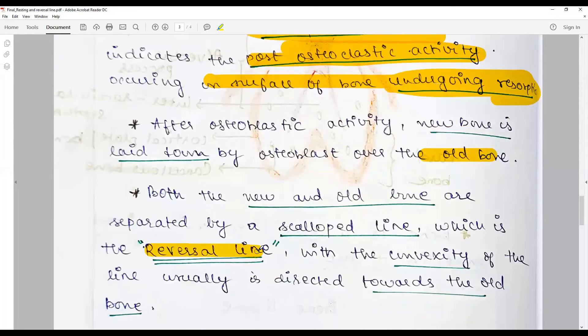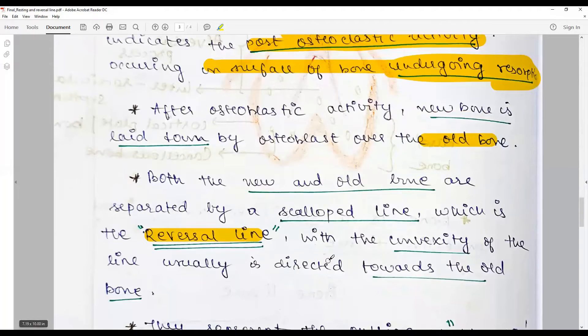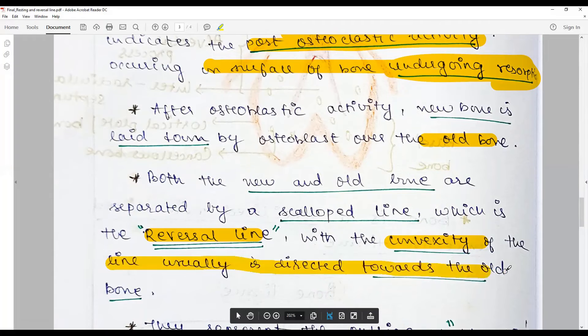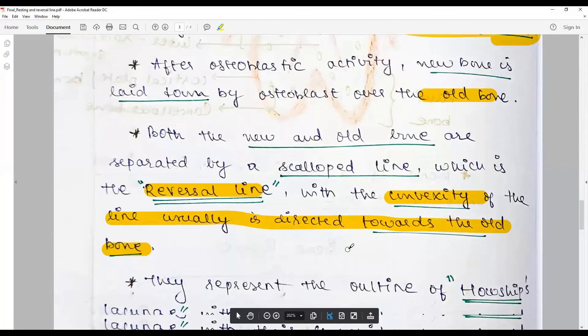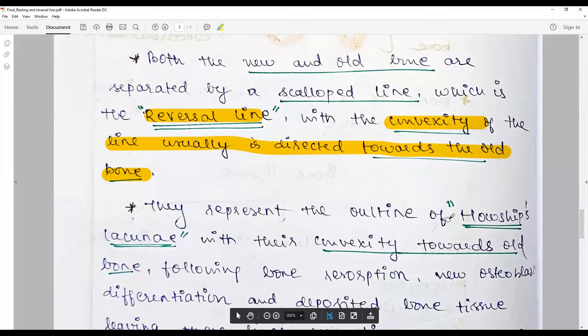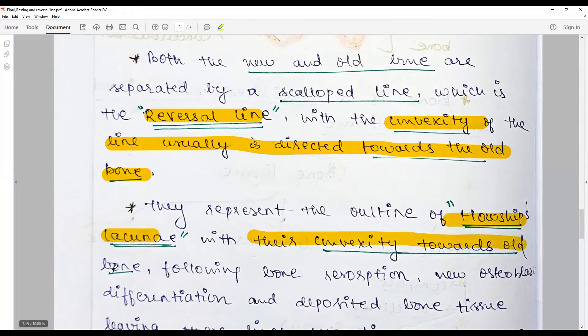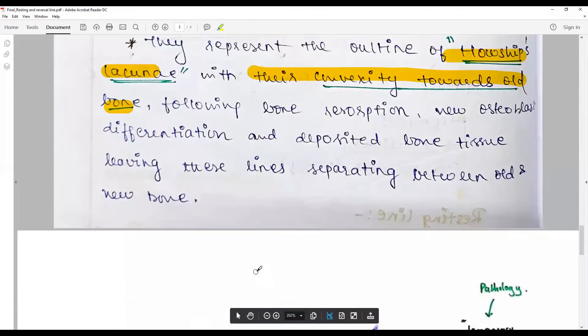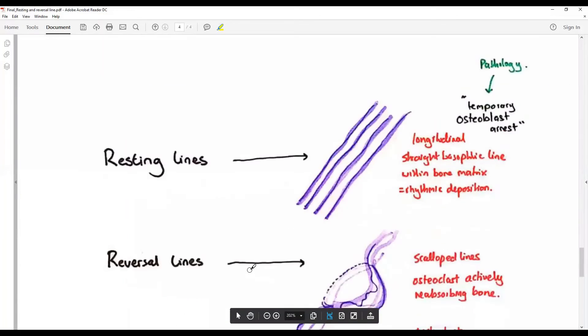line which is called the reversal line. The convexity of the line is usually directed towards the old bone - this is the most important point. They are also the remnants of the Howship's lacunae, their convexity towards the old bone following bone resorption.